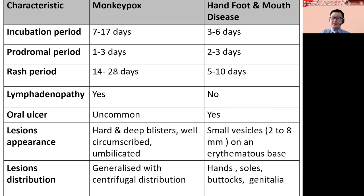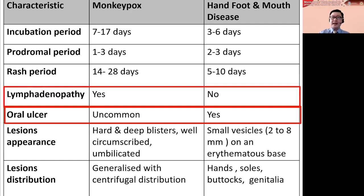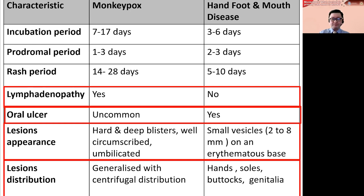This table summarizes the differentiating features between monkeypox and hand, foot, and mouth disease. First, lymphadenopathy is seen in monkeypox but not in hand, foot, and mouth disease. Second, oral ulcers are commonly seen in hand, foot, and mouth disease but not in monkeypox. Third, in monkeypox the blister is hard, deep, umbilicated, and well-circumscribed, while in hand, foot, and mouth disease it's small vesicles ranging two to eight millimeters on an erythematous base. In monkeypox the lesion is generalized with centrifugal distribution, whereas in hand, foot, and mouth disease it is localized to the hand, feet, buttocks, and genitalia.